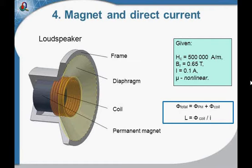Now let's consider a system with a permanent magnet and a source. For example, we selected a loudspeaker. Each coil with current oscillates in the magnetic field of a permanent magnet, so that the oscillations transfer to the diaphragm attached to the coil.